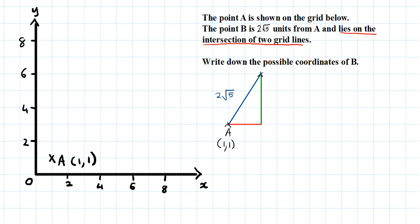And then I can apply the Pythagoras theorem. Although I don't know this red length and I don't know this green length. But it says that point B lies on the intersection of two grid lines. That means it has to be a positive integer in this graph over here.